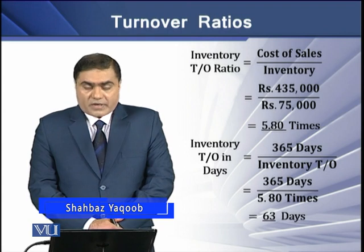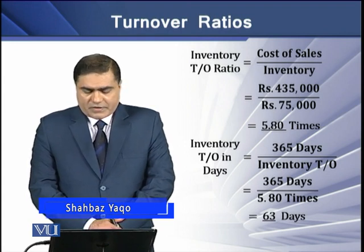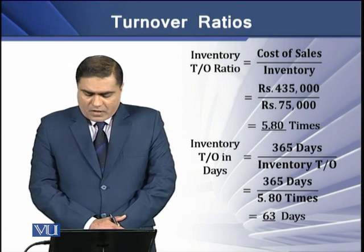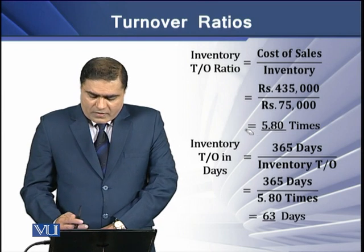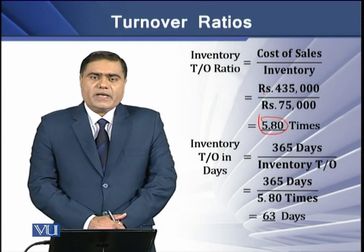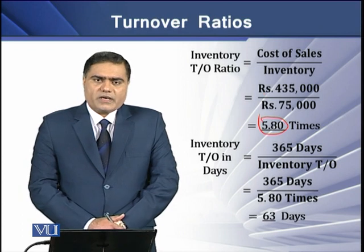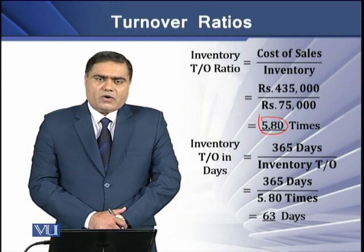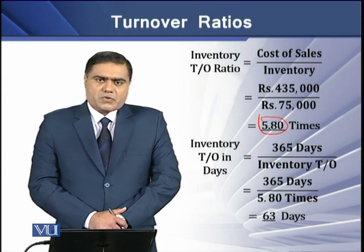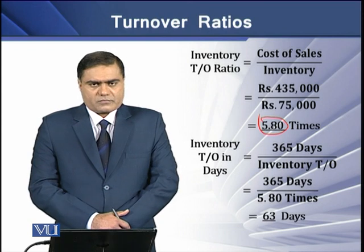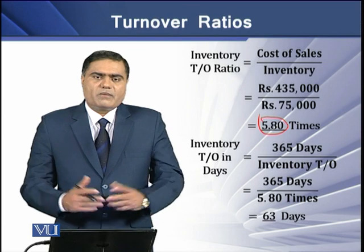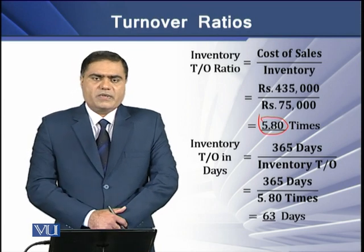If we have cost of sales of Rs. 435,000 and inventory of Rs. 75,000 and we divide cost of sales by inventory, we get a ratio of 5.80. This means for every Rs. 1 invested in inventory, the firm has generated a cost of sale of Rs. 5.8, so the inventory has been converted into cost of sales 5.8 times. Higher is the ratio, higher is the efficiency level of the management; lower is the ratio, lower is the management efficiency.